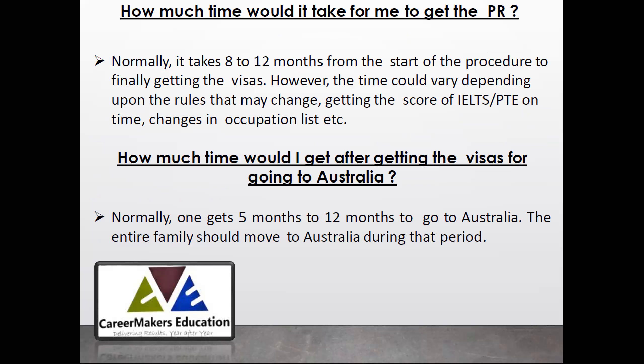Regarding how long it takes to get PR: it depends on your score. If you have a strong overall points score, you can think of getting PR in 8 to 12 months. Many of my students have got PR within just 2 or 3 months. The earlier you start the process and obtain your IELTS or PTE score, the more are your chances of getting Australian PR within 8 to 12 months.